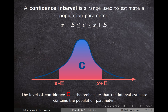In this video we're going to discuss how to construct interval estimates for the population mean using the sample mean. The probability that the population mean is in the interval between x-bar minus e and x-bar plus e is equal to c, where c is called the confidence level, x-bar is the sample mean, and e is the error margin.